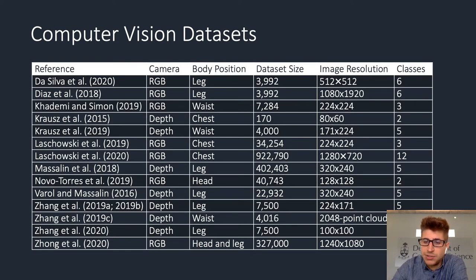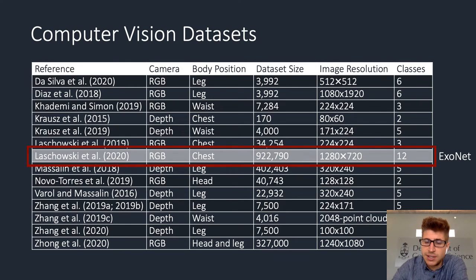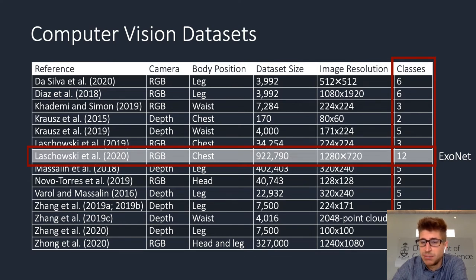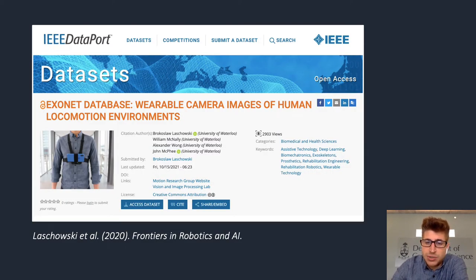Compared to other computer vision datasets for robotic prosthetic legs and exoskeletons, the ExoNet dataset is one of the largest and most diverse published to date, characterized by significantly more images and more than double the number of individually labeled classes. We uploaded the ExoNet dataset to IEEE DataPort, including the annotations, and made it publicly available to the research community. If you're interested to learn more about ExoNet, please check out our Frontiers in Robotics and AI paper.